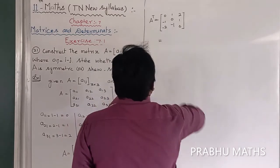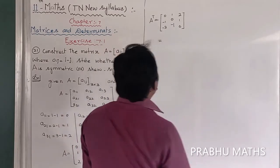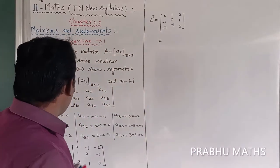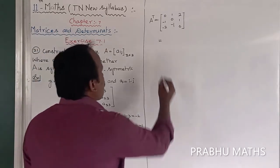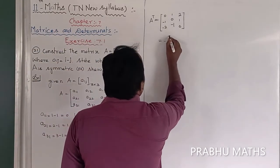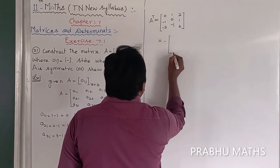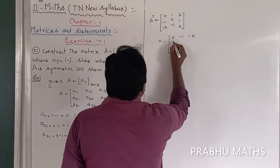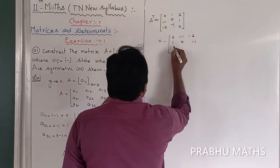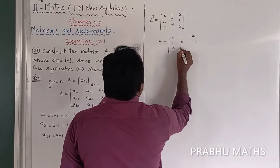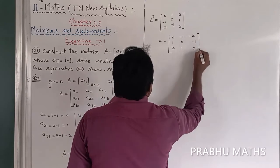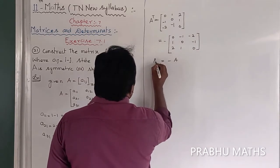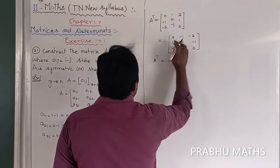Now, taking minus A — that is, minus of the original matrix A — we get: minus of [0, minus 1, minus 2; 1, 0, minus 1; 2, 1, 0] equals [0, 1, 2; minus 1, 0, 1; minus 2, minus 1, 0]. So that is equal to minus A, and we can see that A transpose equals minus A.